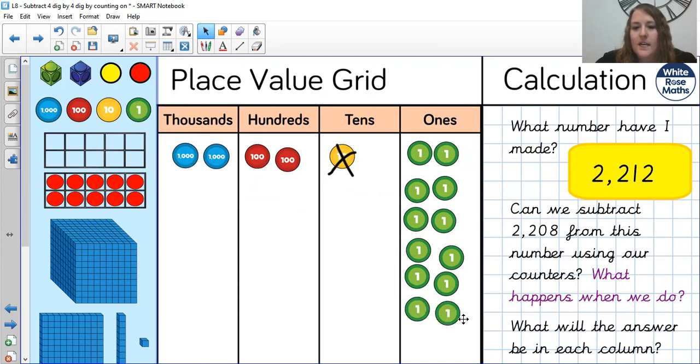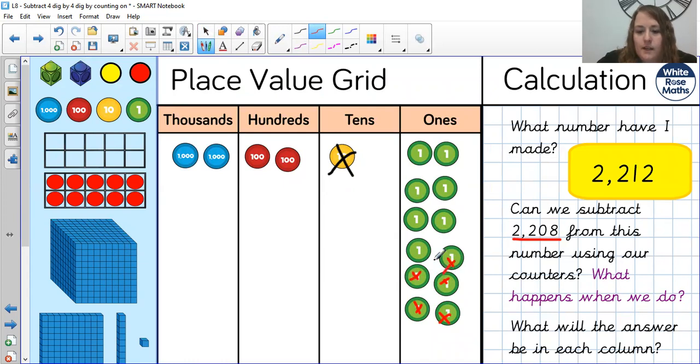So once I have exchanged and I've made sure I've got enough in my ones column, I can then start subtracting. So I need to subtract 2,208. So eight of the ones, one, two, three, four, five, six, seven, eight.